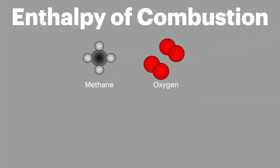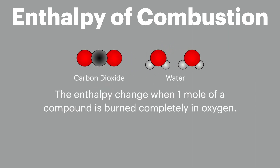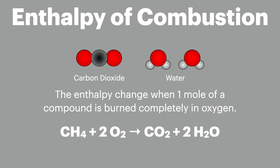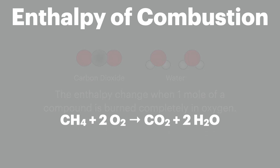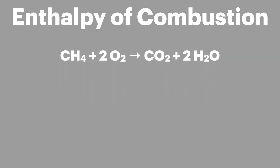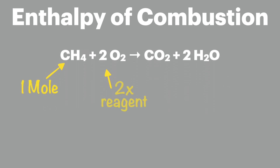At number three we have the enthalpy of combustion. This is the enthalpy change when one mole of a compound is burnt completely in oxygen. We can show the enthalpy of combustion for methane with this equation. We're burning one mole again, so we adjust the reactants to make sure only one mole is burnt — no more and no less. We also must make sure it's complete combustion, so we're making carbon dioxide, not carbon monoxide.